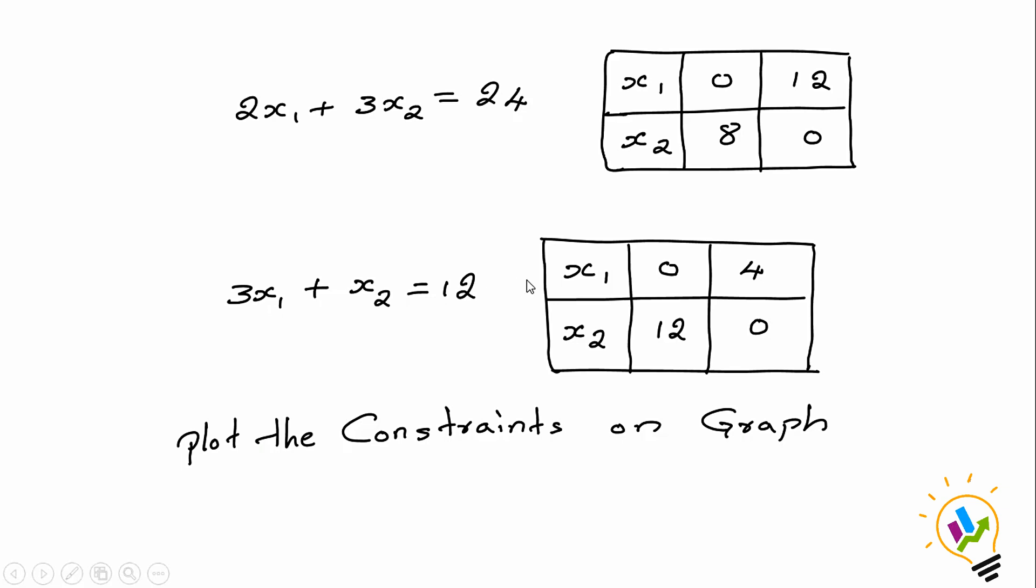The second line is 3x1 plus x2 equals 12. When x1 is 0, x2 will be 12. If x2 is 0, x1 will be 4. These points need to be plotted on the graph paper.